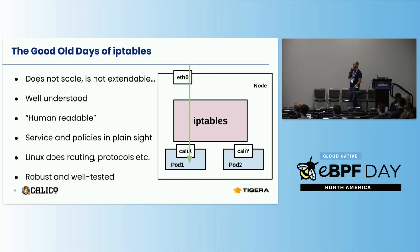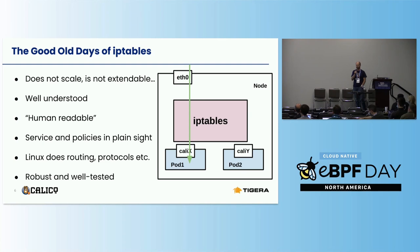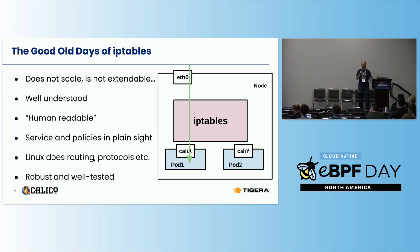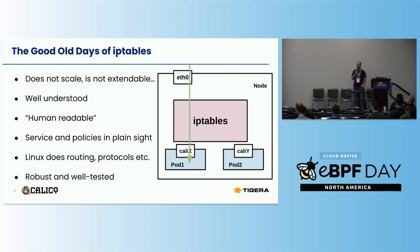Let's first start with iptables and the good old days. It is a super well-understood data plane, but it doesn't necessarily scale well and it's not very extendable. If you would like to expand iptables, you would have to provide a kernel module — and good luck persuading your users to load your kernel module in their environment. The good thing is that all the rules are in the iptables, and when you dump the iptable rules, it's kind of human-readable. Services are implemented by kube-proxy, and the policies are kind of in plain sight, so you can dump it and with some effort you can read it and understand it. Linux does the rest of the heavy lifting — it does routing, handles the protocols, edge cases, and so on, and it's super robust and well-tested.